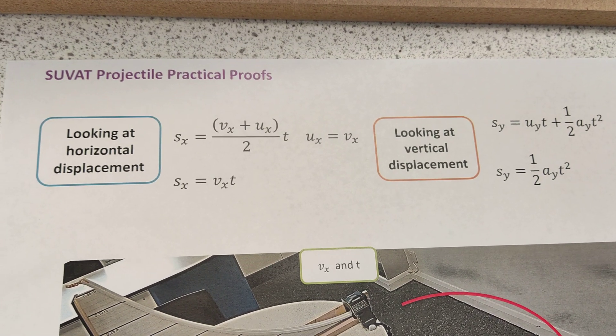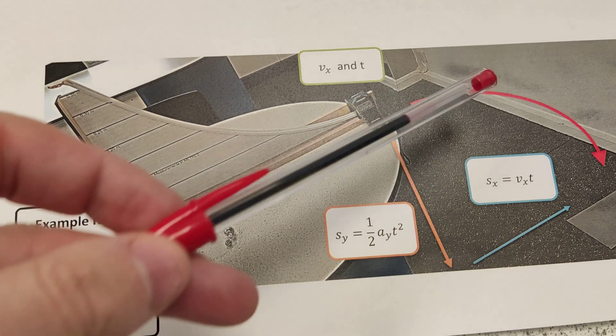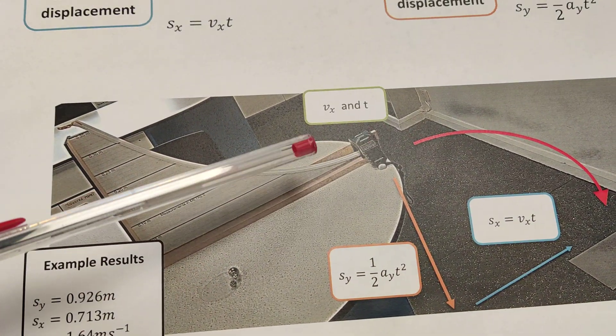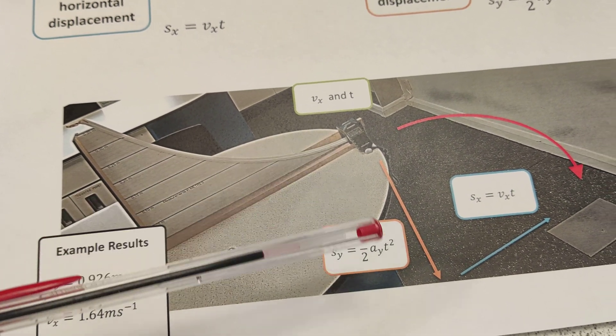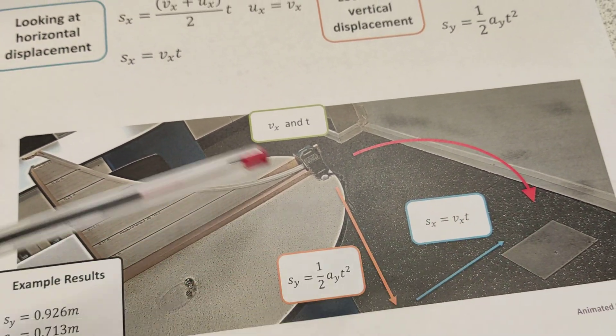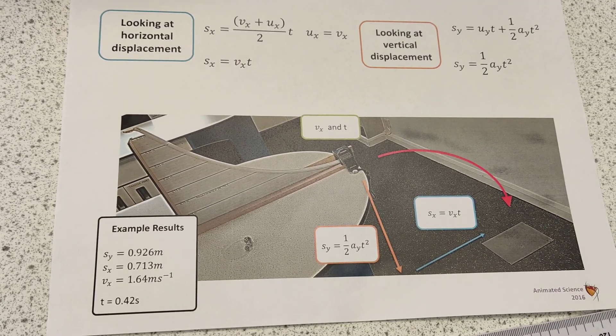Effectively, it looks at how to compare for a projectile that runs down a ramp onto the floor - how to compare the displacement in the y direction and displacement in the x direction using our SUVAT formulas. I'm not going to explain all that now, but what I've got for you is...